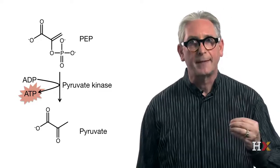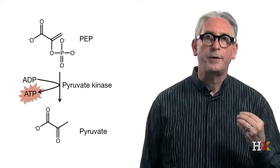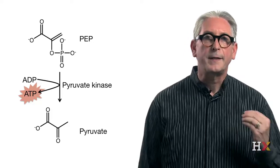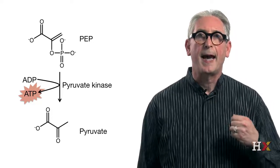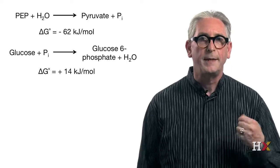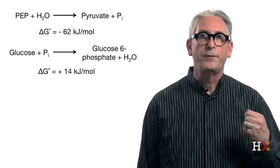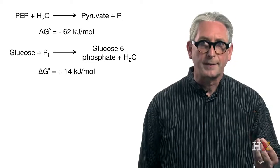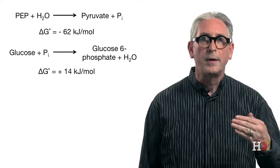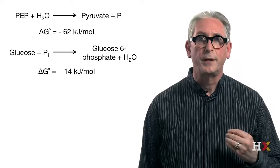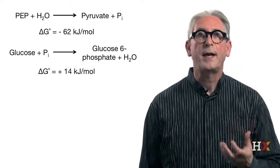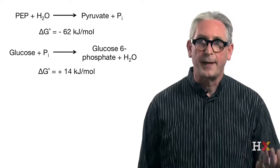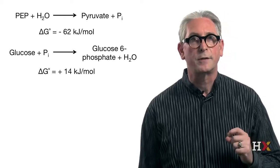Having a shared reactant and a sum of free energy that is negative does not alone ensure coupling. For example, consider the hydrolysis of phosphoenolpyruvate and the phosphorylation of glucose into glucose 6-phosphate. These two reactions share a common reactant — inorganic phosphate — and the sum of the change of free energy is also negative. However, the cell does not contain any enzyme that can catalyze both of these reactions. As a consequence, these two reactions are not coupled.